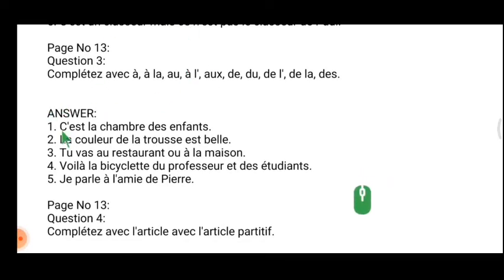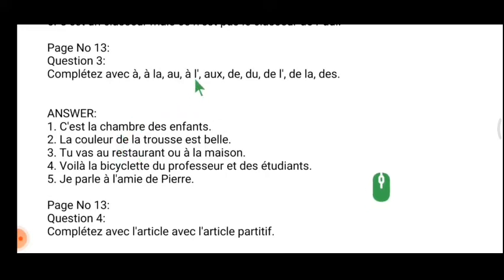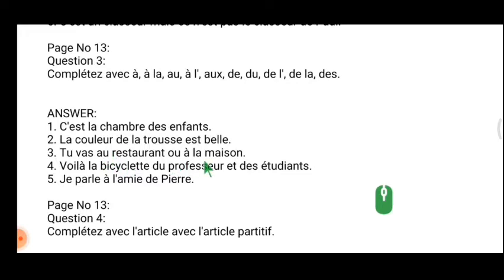We will see this together. 'C'est la chambre des enfants' — here 'la' is used because it is mentioned as 'the room of the children.' 'La couleur de la trousse est belle' — 'de la trousse' means 'of the pouch,' so 'of the.' As I told you before, the preposition and the article défini form the article contracté — these things we learned from this lesson. 'Il va au restaurant ou à la maison' — restaurant is masculine, so 'au'; maison is a place and feminine, so 'à la.'